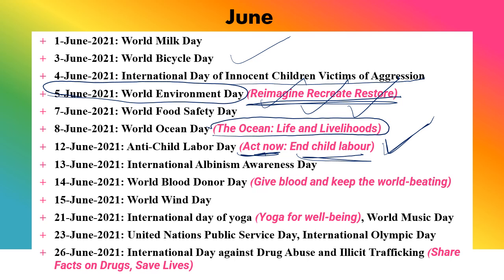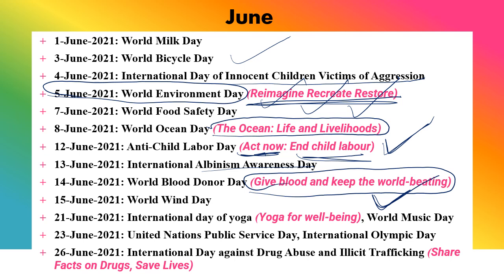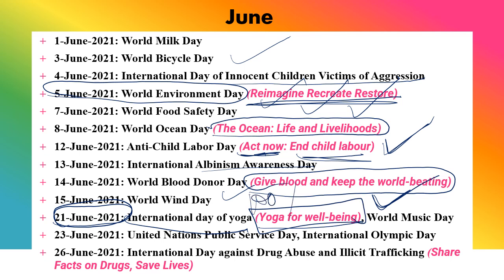13th June is International Albinism Awareness Day. 14th June is World Blood Donor Day, with the very important theme 'Give Blood and Keep the World Beating.' 15th June is World Wind Day. 21st June is very frequently asked in exams — International Day of Yoga — and its theme, which you must know 100% for the exam, was 'Yoga for Wellbeing.' 21st June is also World Music Day.